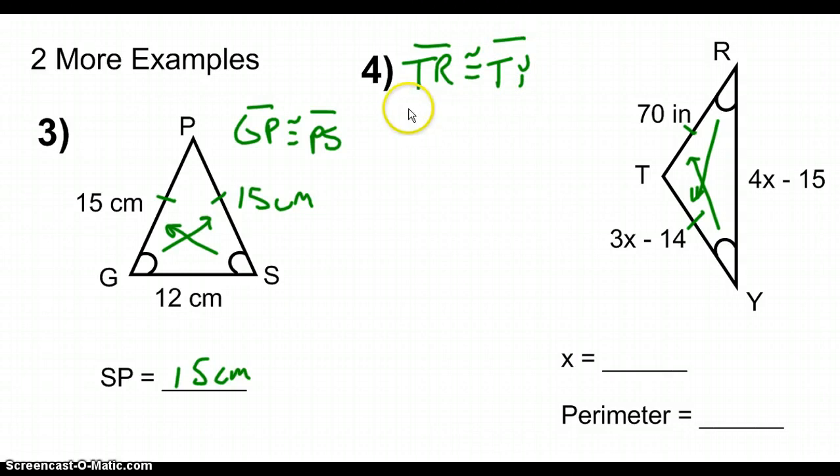So we can set up an equation where the length of TR, 70 inches, is equal to the length of TY, which is represented by the expression 3X minus 14. So if we add 14 to both sides, we have 84 equals 3X, and if we divide by 3, we find that the value of X is going to be 28.